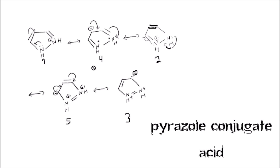Having two positive charges next to each other is unfavorable because positive charges repel each other. You can also look at it another way: a positively charged nitrogen is an electron-withdrawing group, so when a positive charge is next to another nitrogen, it pulls electrons away and increases the positive charge on that nitrogen. Either way, having adjacent positive charges increases instability — this is not good.